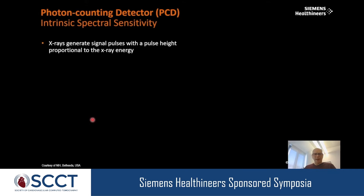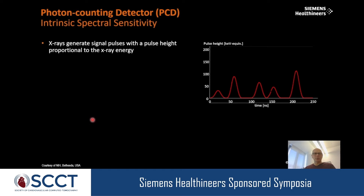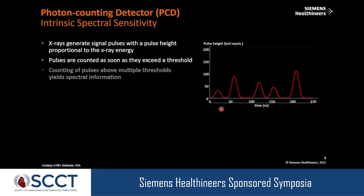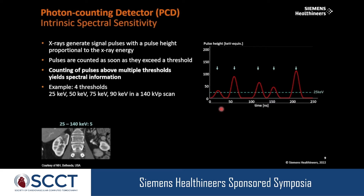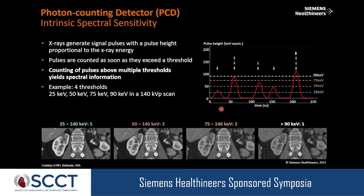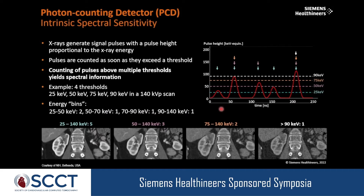To derive spectral information, the pulse height is proportional to the energy of each interacting quanta. Using thresholds in the electronics, depending on whether a peak exceeds a threshold, the photon is counted into the low, medium, high, or highest energy bin. After one scan, we don't have just one image at one energy level — we have four images at four different energy levels, which can be used for any kind of spectral processing.